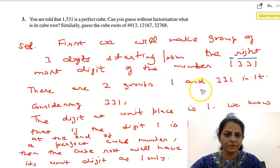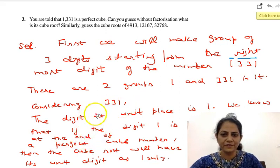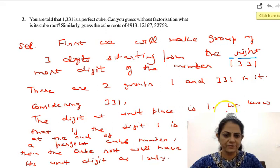So there are two groups, 1 and 331. Considering 331 as one group, the digit at unit place is 1. We know that if digit 1 is at the end of a perfect cube number, then the cube root will have its unit digit as 1 only.